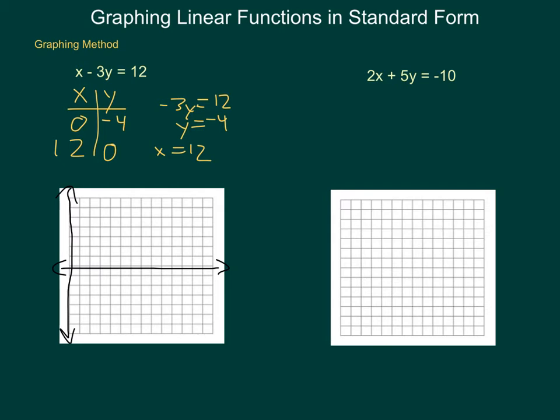Then go through and plot my two points. I know that I have the point zero, negative 4, which is here, and 12, zero, which would be here.